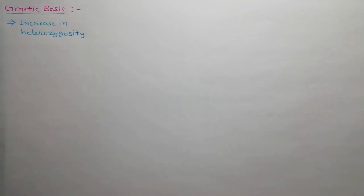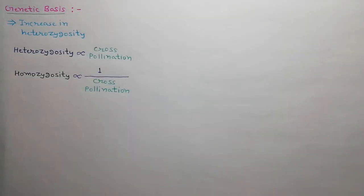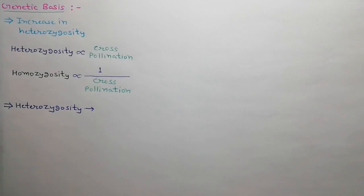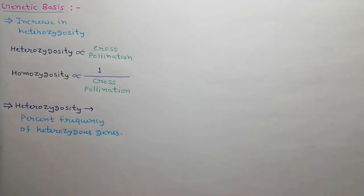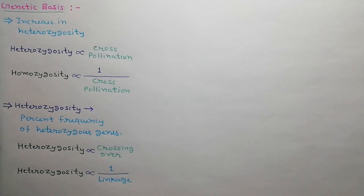First of all, we will discuss about the genetic basis of cross-pollinated crops. Due to cross-pollination, heterozygosity increases and homozygosity decreases generation by generation. Heterozygosity is directly proportional to cross-pollination while homozygosity is inversely proportional to cross-pollination. Heterozygosity is the percent frequency of genes present in heterozygous condition in a population. It is directly proportional to crossing over and inversely proportional to linkage.